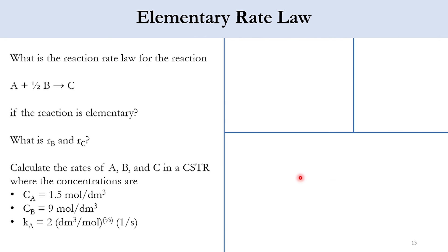Now let's solve an example related to elementary rate law. The given reaction is A + ½B → C, and the system is elementary. This means the order of A is 1 and the order of B is 1/2. We need to find RB and RC, and calculate the rates of A, B, and C in a CSTR where the concentrations CA = 1.5, CB = 9, and KA = 2 are given. First, we will use the relative rate of reaction.